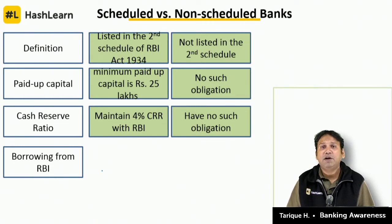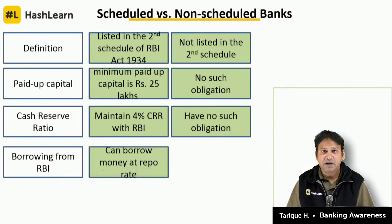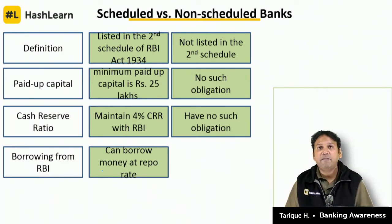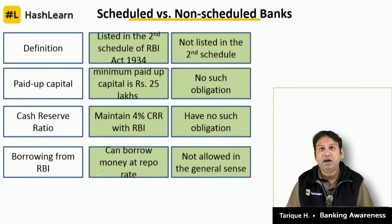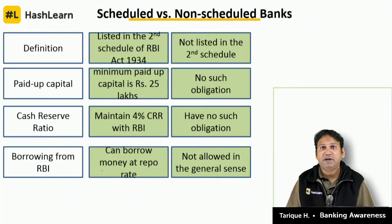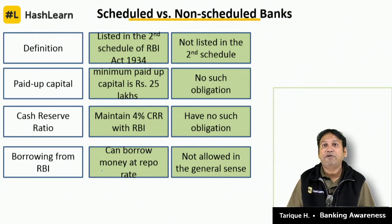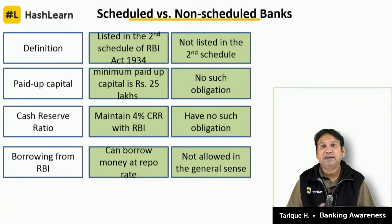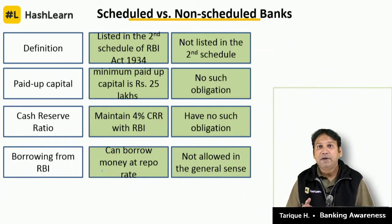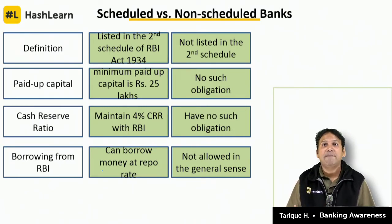Scheduled banks can borrow money from RBI at the repo rate, whereas non-scheduled banks are not allowed to borrow from RBI at repo rate. The repo rate is the rate at which banks borrow money from RBI for a short period, usually overnight. Right now the repo rate is 6.5%. If the repo rate goes up, banking lending rates also go up, making it difficult for people to buy cars and homes — impacting the economy as a whole.